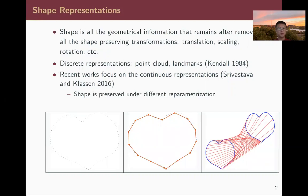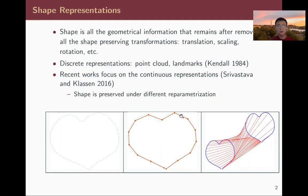People represent shape in different ways. For example, they can be represented in a discrete way — a leaf can be represented by a point cloud or by landmarks. But recently, people are more focused on continuous representation, where we use a 2D parametric curve to represent the shape.